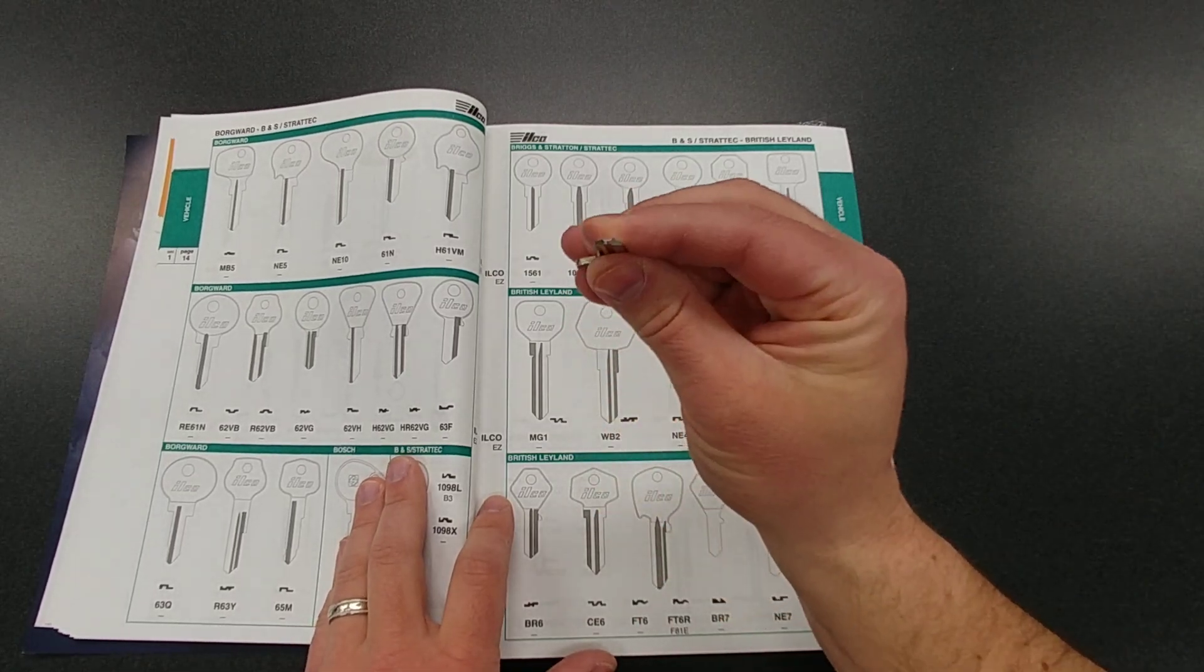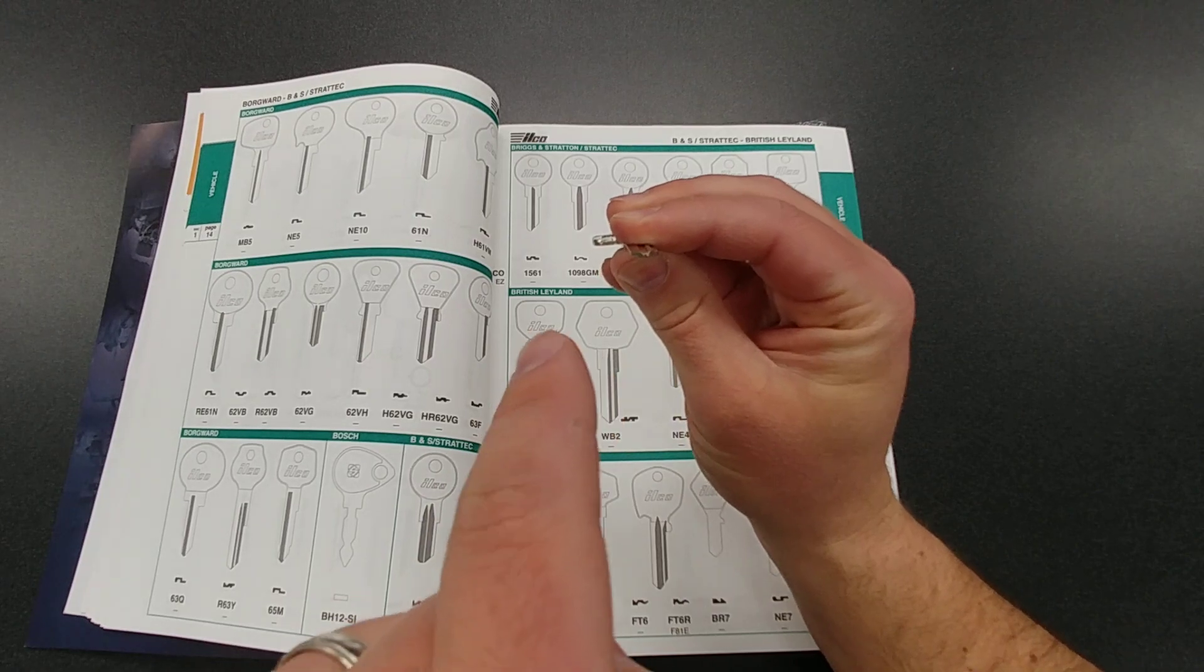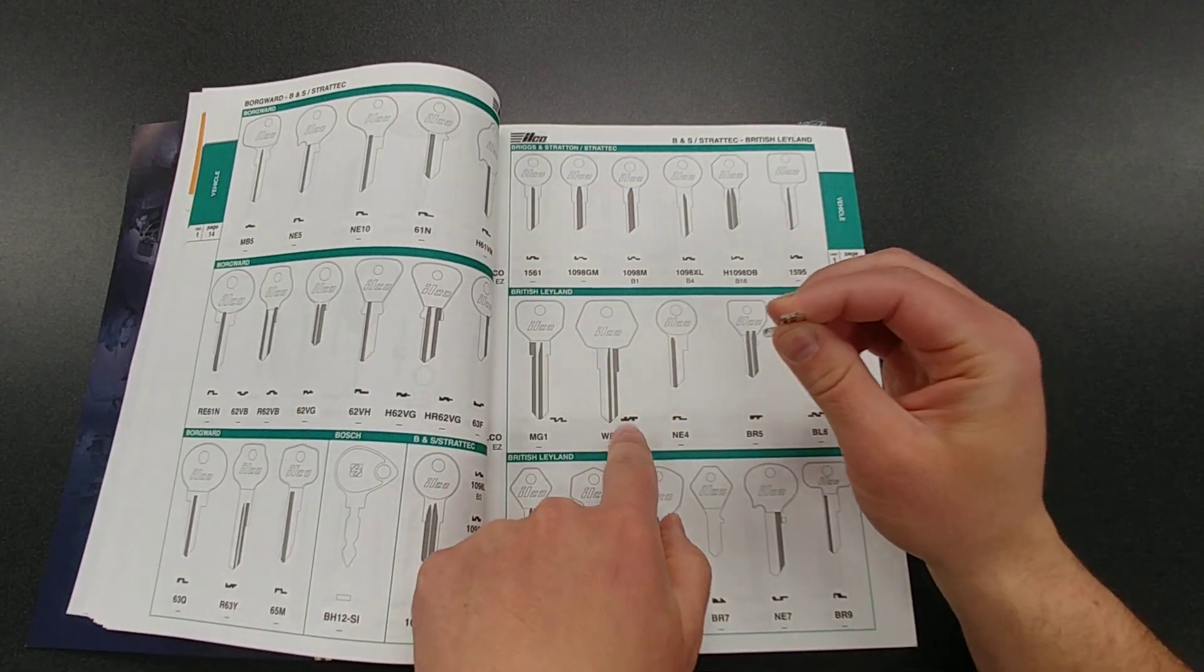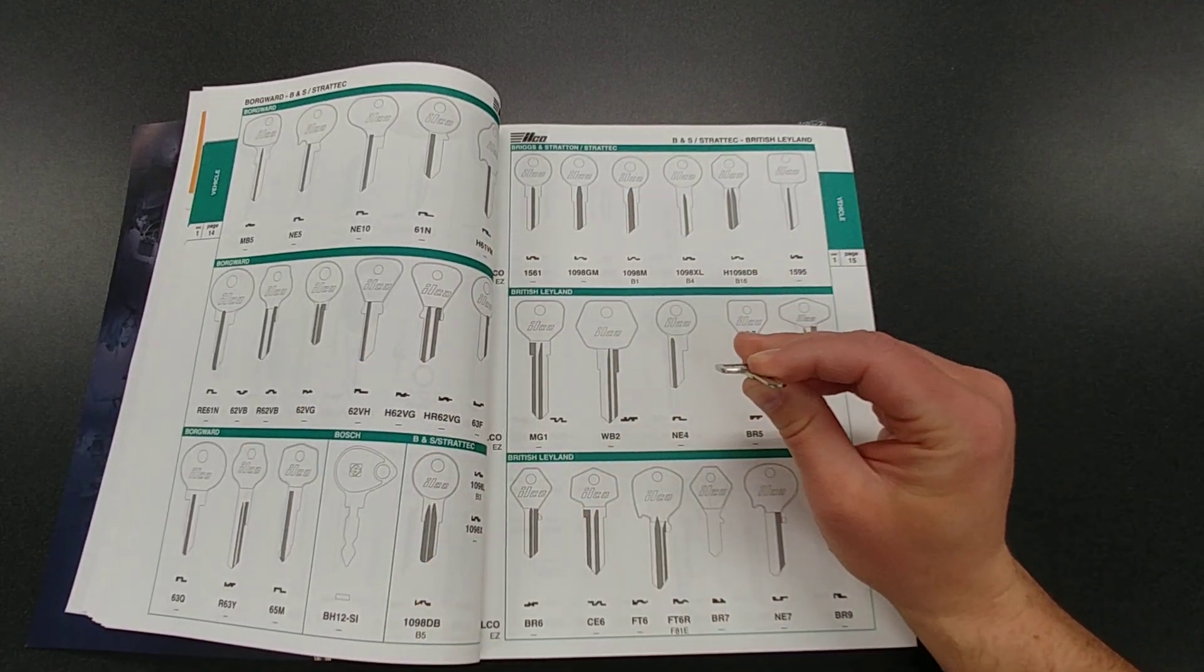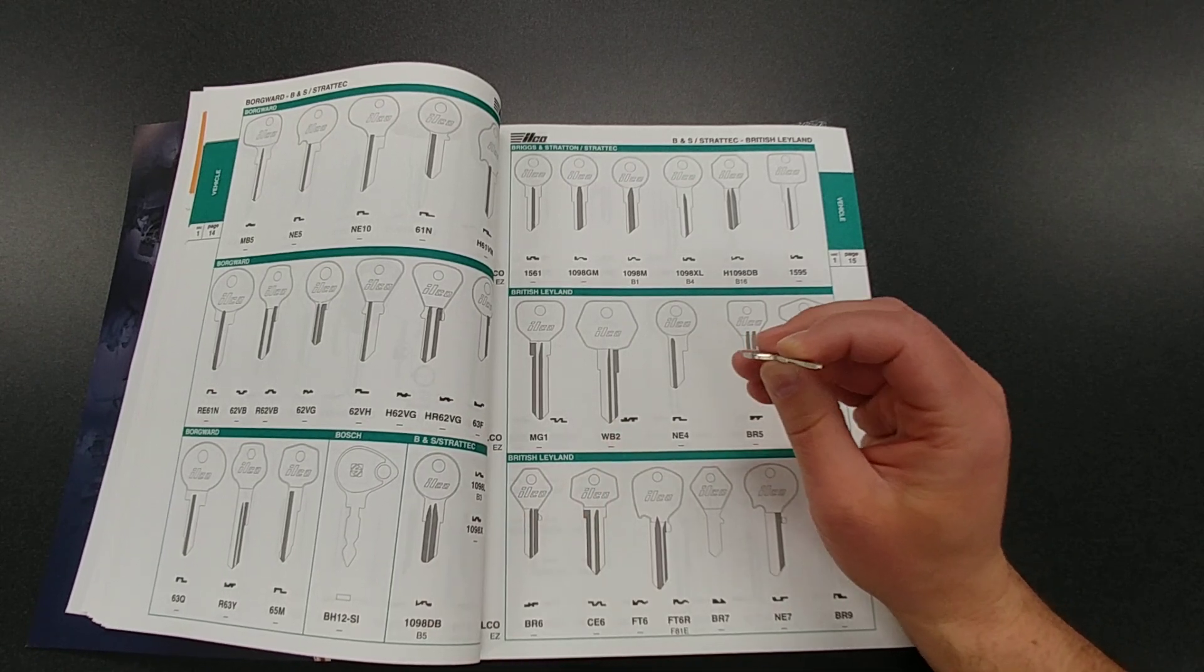Now, a lot of guys are going to want to look at the customer's key like this, right? You want to look down it and then you're going to look at this and you're going to try to match it up. But that's not how these little profiles are in here for us.